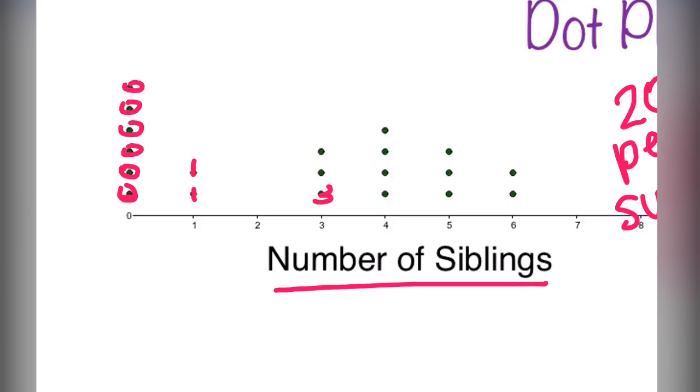Next, two people have one sibling, three people have three, four people have four, three people have five siblings, and two people have six siblings.